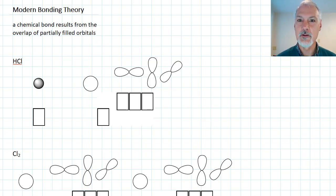Welcome to this, our final program from the Higher Level Bonding Unit. I want to look a little bit more closely at the nature of what's going on inside of the orbitals during the formation of a bond, and what we call the Modern Bonding Theory. Modern Bonding Theory states that a chemical bond results from an overlap of partially filled orbitals. Let's take a look at an example by starting and look at what happens in HCl.